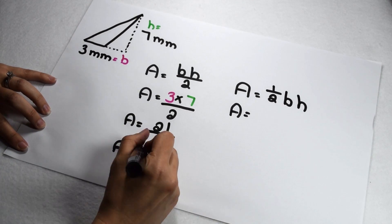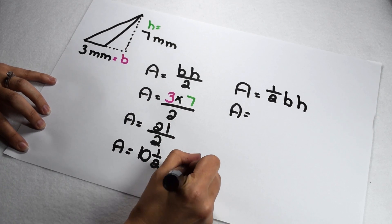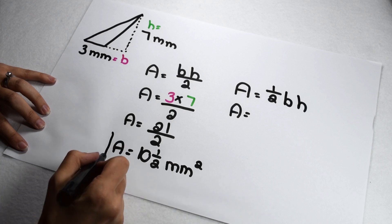I always need to label my answer. Since my triangle is labeled in millimeters, my area needs to be in millimeters. An area is always a two-dimensional measurement, so my area comes out to be 10 and a half square millimeters.